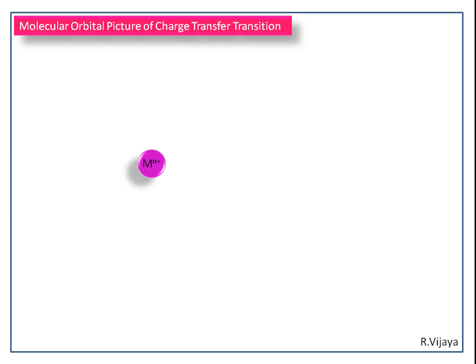This is the central metal ion with the d orbitals, and this is the ligand with the p orbitals. Here I am going to split the d and p orbitals to avoid complications, and I am also going to consider a single electron to simplify this picture.